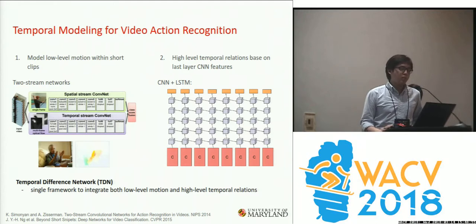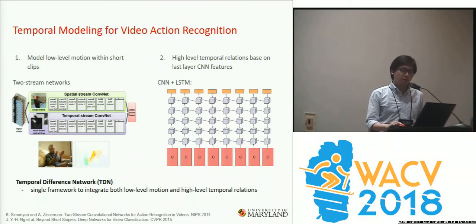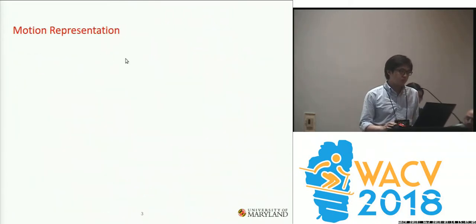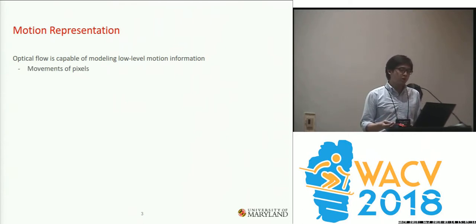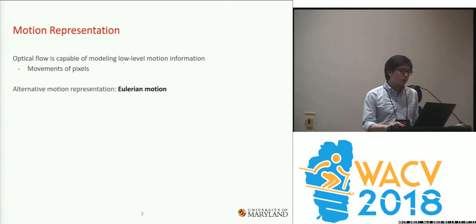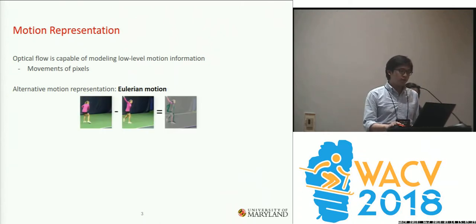In this work, we propose the Temporal Difference Network, a single framework that aims to integrate both low-level motion and higher-level temporal relations. Previously, optical flow is a popular motion representation capable of modeling low-level motion information, but it cannot model higher-level motion information because it is defined on the movements of pixels. Instead, we look into an alternative motion representation called Eulerian motion, which is very simple — it is the difference of the RGB images.